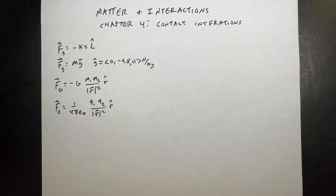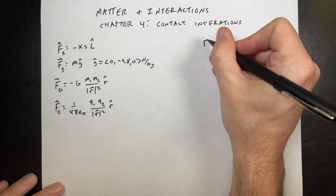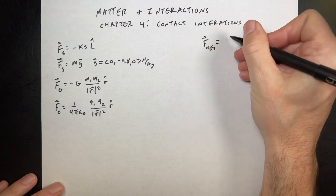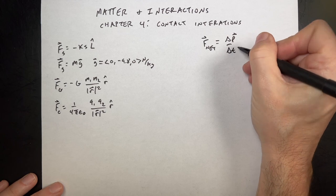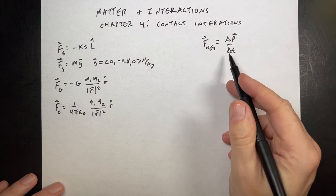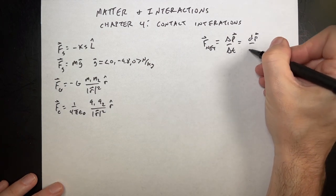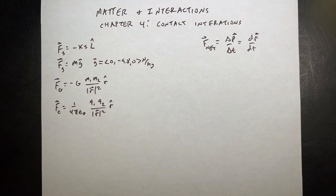Where are we right now? There are a couple big things that we did. Of course, we did the Momentum Principle, which says that the net force on an object is that object's change in momentum with respect to time. If the time interval is really small, that's a derivative. There's other things about average velocity, position update, all that stuff.